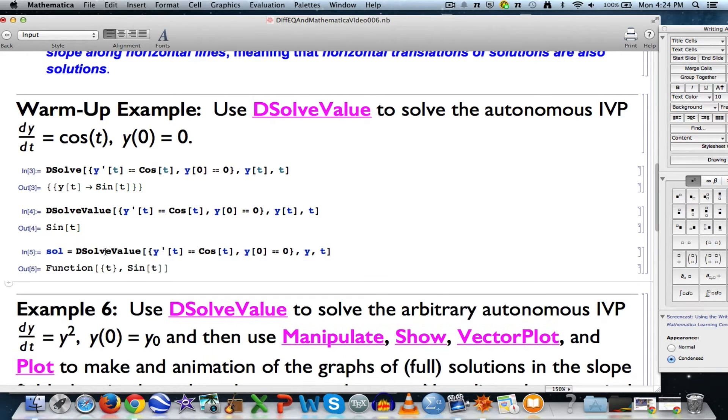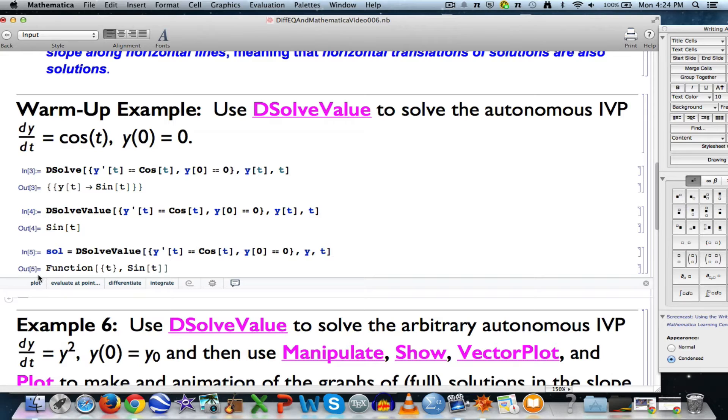What is that output? It's also kind of strange. Function, square brackets, t inside curly braces, sine t, a comma there. What is that thing?